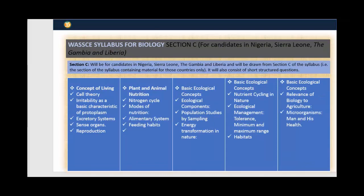Now let's move to Section C, which is for candidates in Nigeria, Sierra Leone, Gambia, and Liberia. Topics include concepts of living organisms, plant and animal nutrition, nitrogen cycle, mode of nutrition, alimentary system, feeding habits, basic ecological concepts, and population studies.